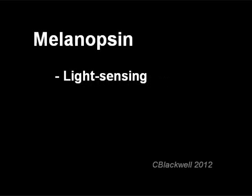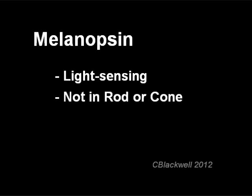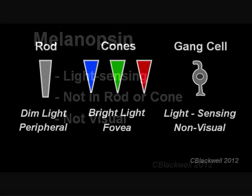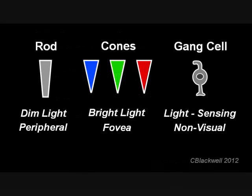Melanopsin is functional — that is, it senses light. But it is not located in a rod or a cone, and it doesn't contribute to vision. It is found in a surprising place: in ganglion cells in the retina. Light-sensing ganglion cells. How does that happen?